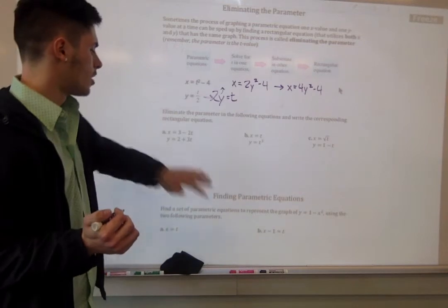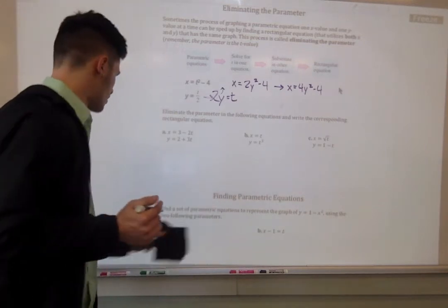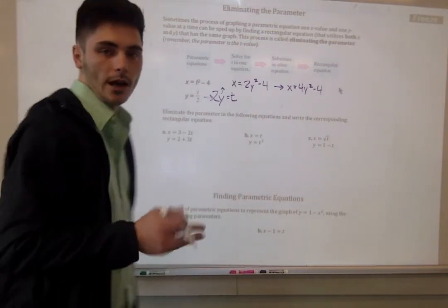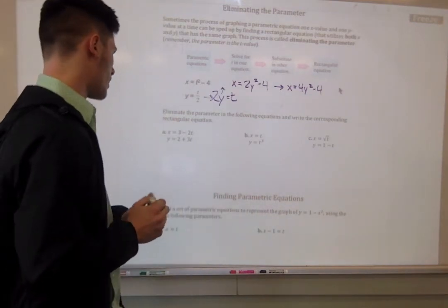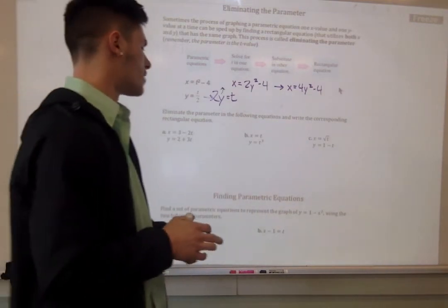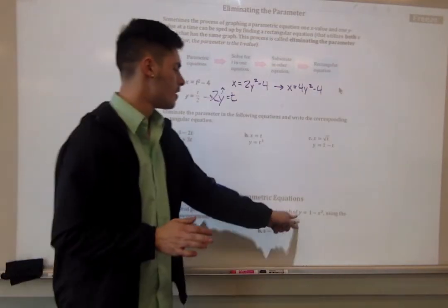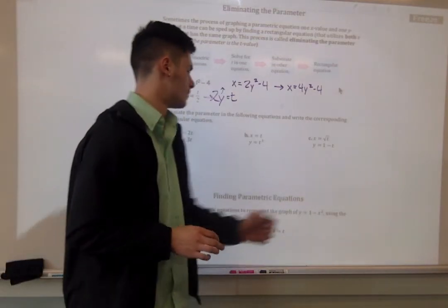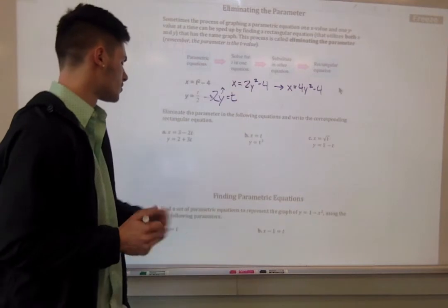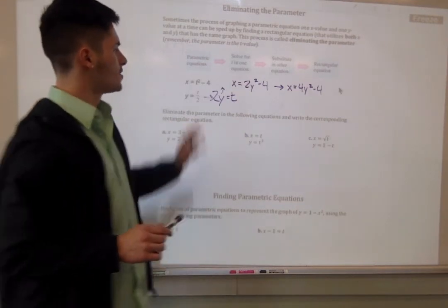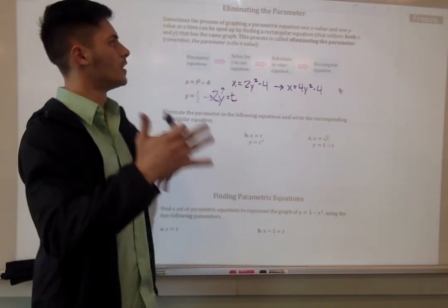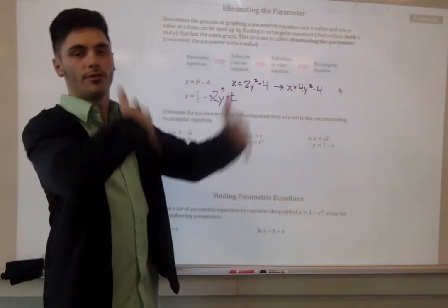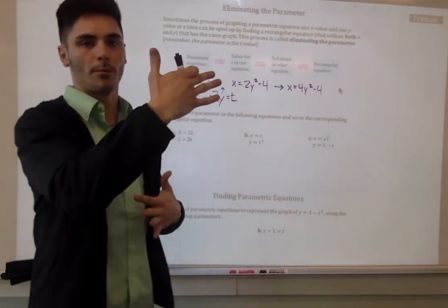We'll try to talk about finding parametric equations real quick. And then I will let you all off. Find a set of parametric equations to represent the graph of y equals 1 minus x squared using the two following parameters. Based on this, if we're going to solve for a variable and plug it into the other one to eliminate the parameter, if we're finding the parameter, let's flip that process around.